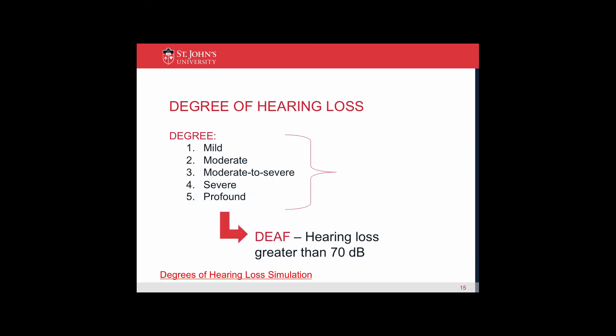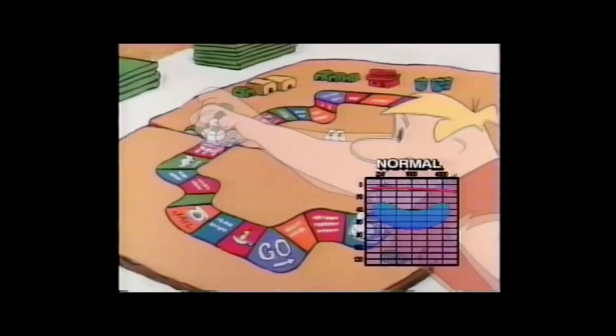Hearing losses may be mild, moderate, moderate to severe, or severe to profound in degree — this would be considered hard of hearing. Or a person may be deaf, with a hearing loss greater than 70 dB.